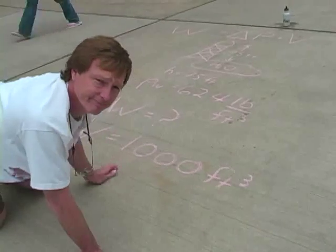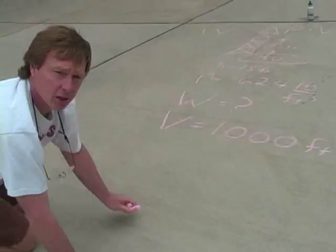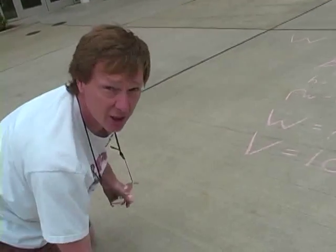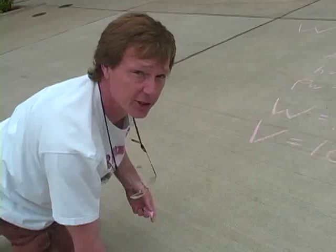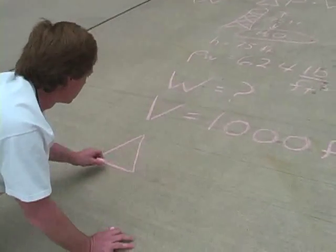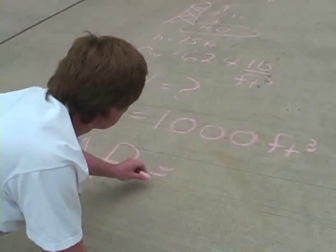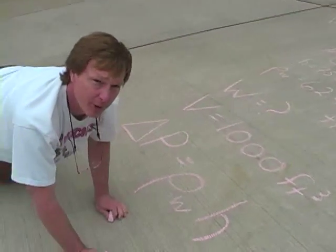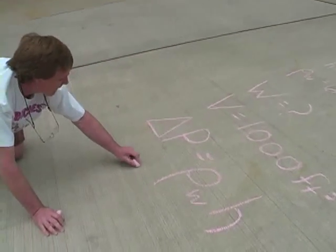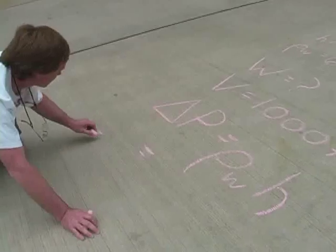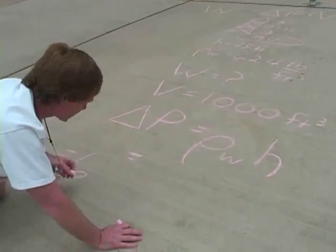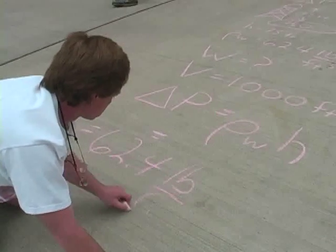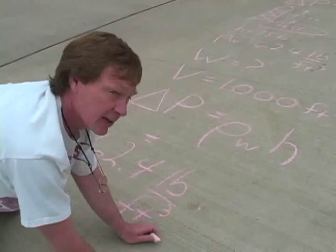Let's calculate the work in sections. We'll calculate the pressure difference first. In English units, we use weight density instead of mass density, so the pressure difference is equal to the weight density of water times the height raised: 62.4 pounds per cubic foot times 75 feet.